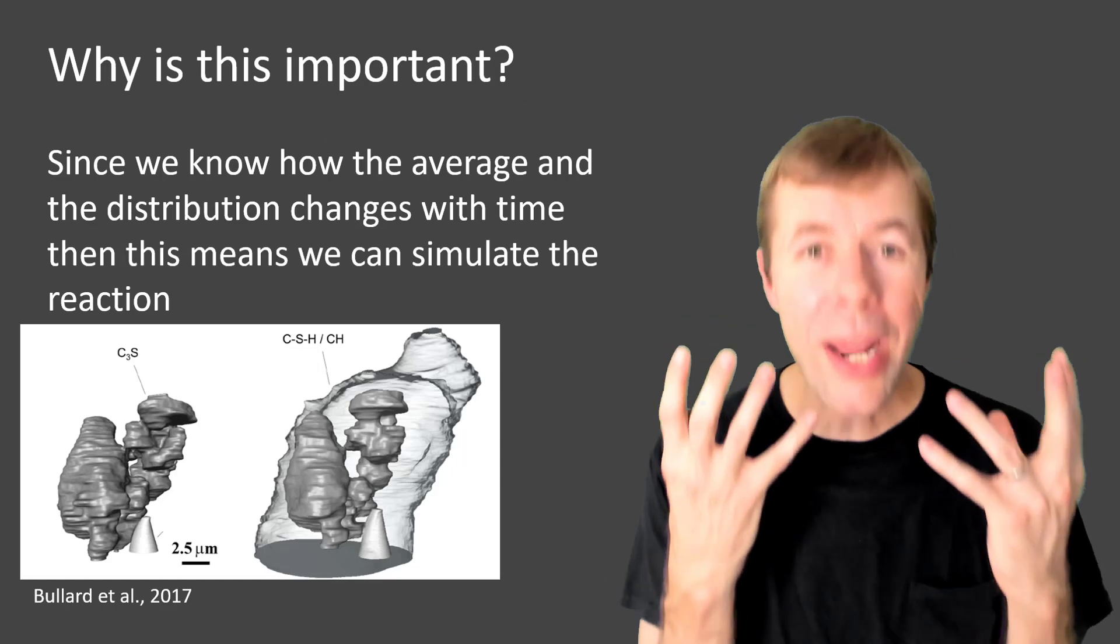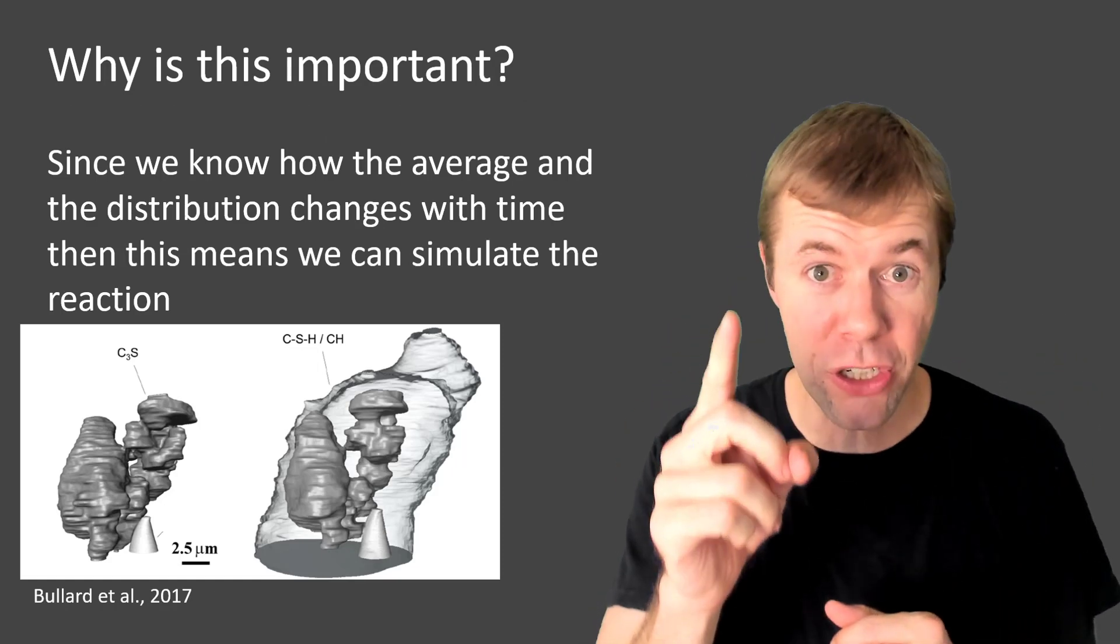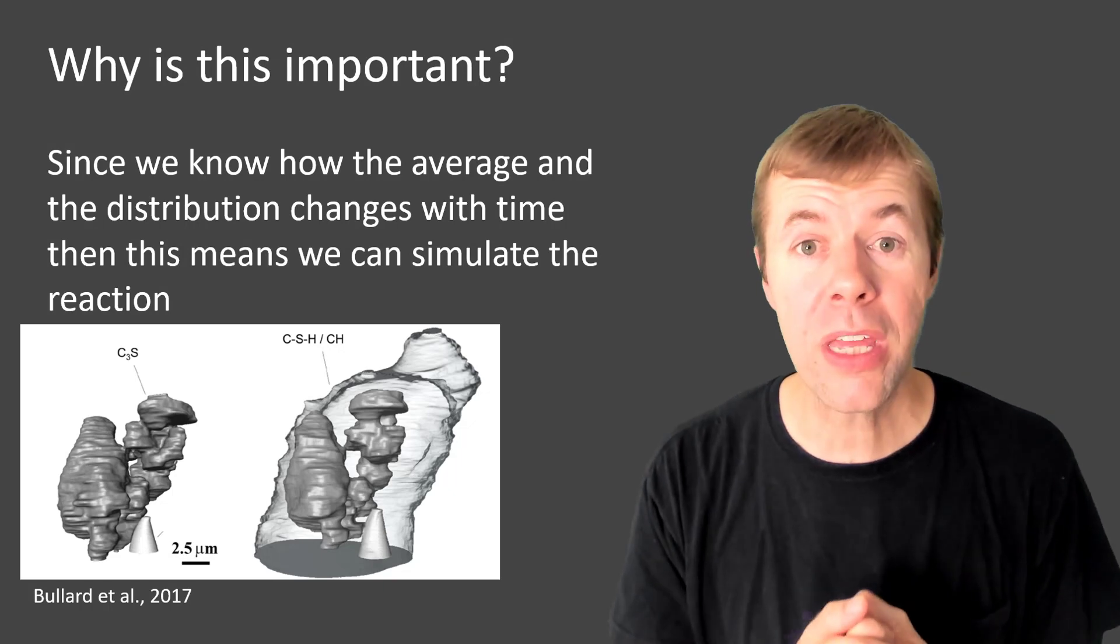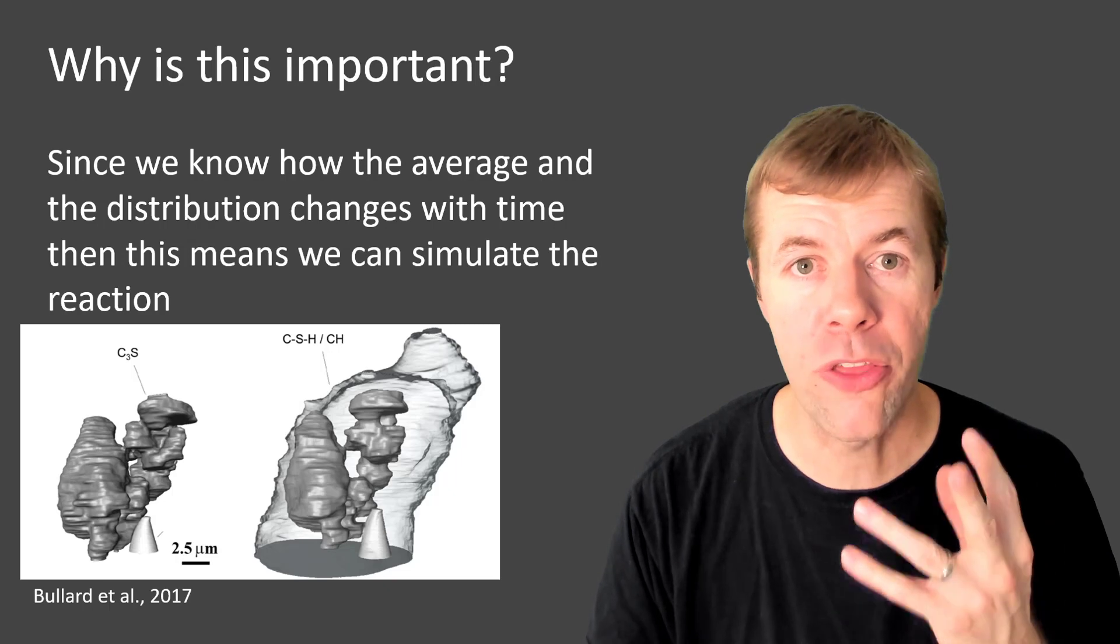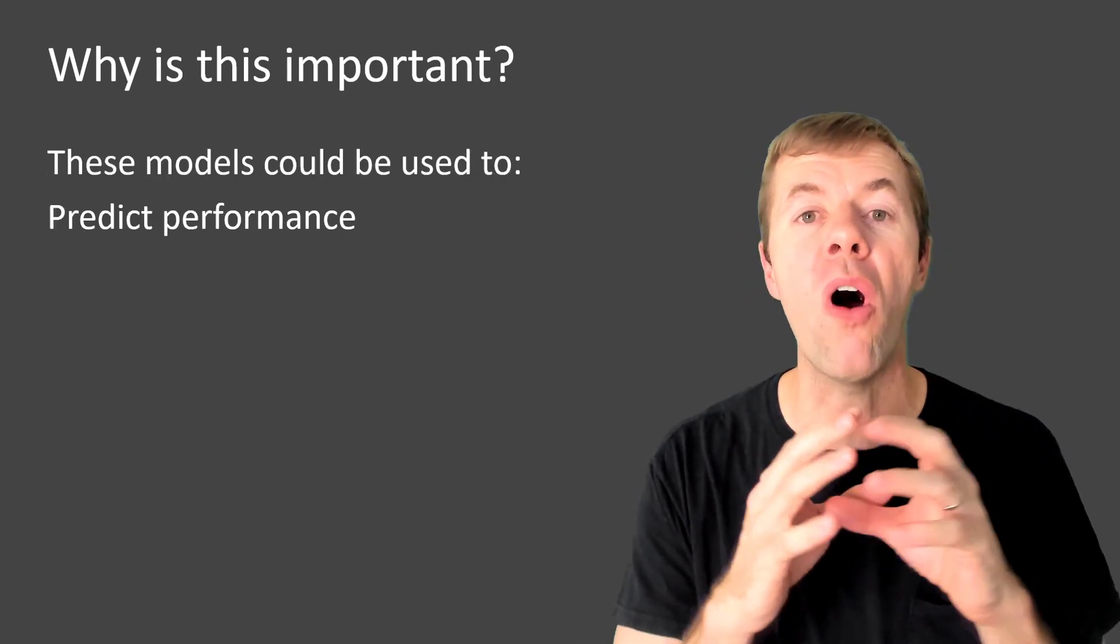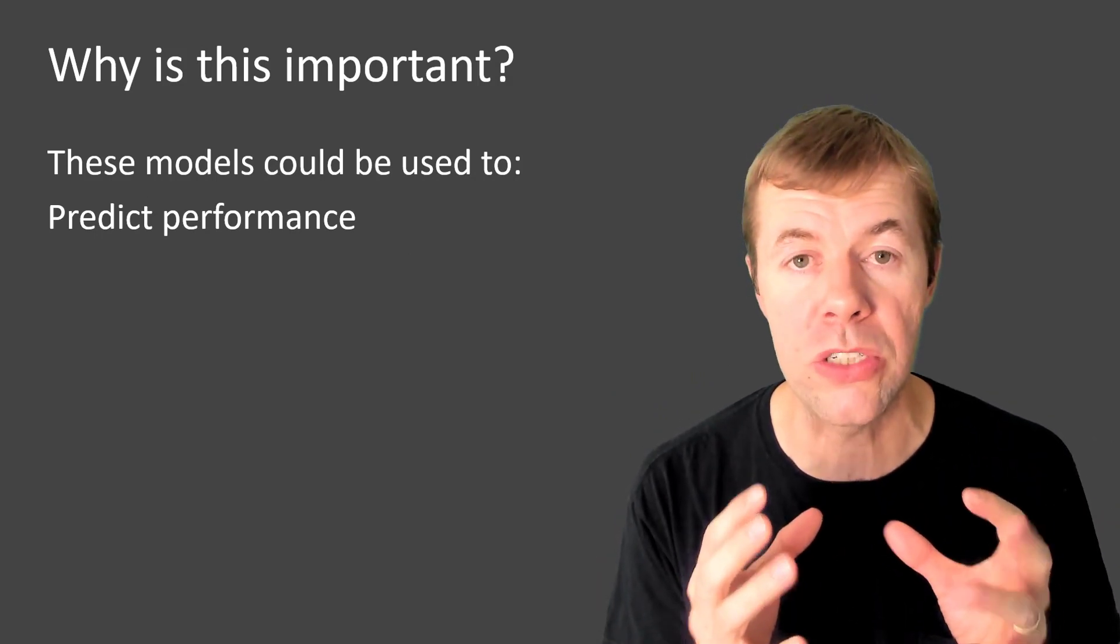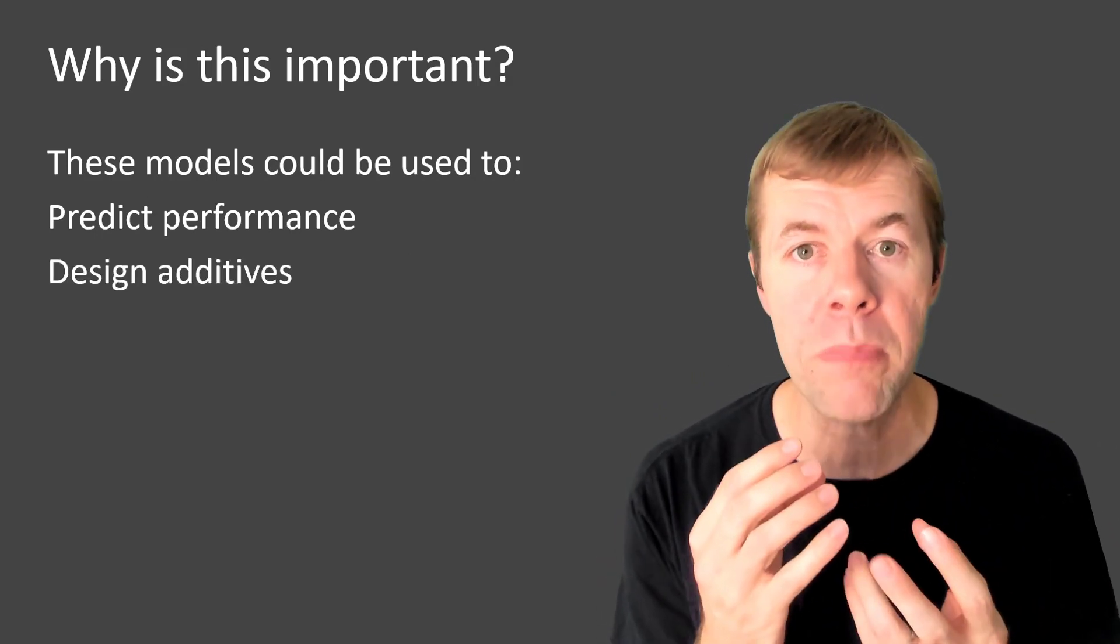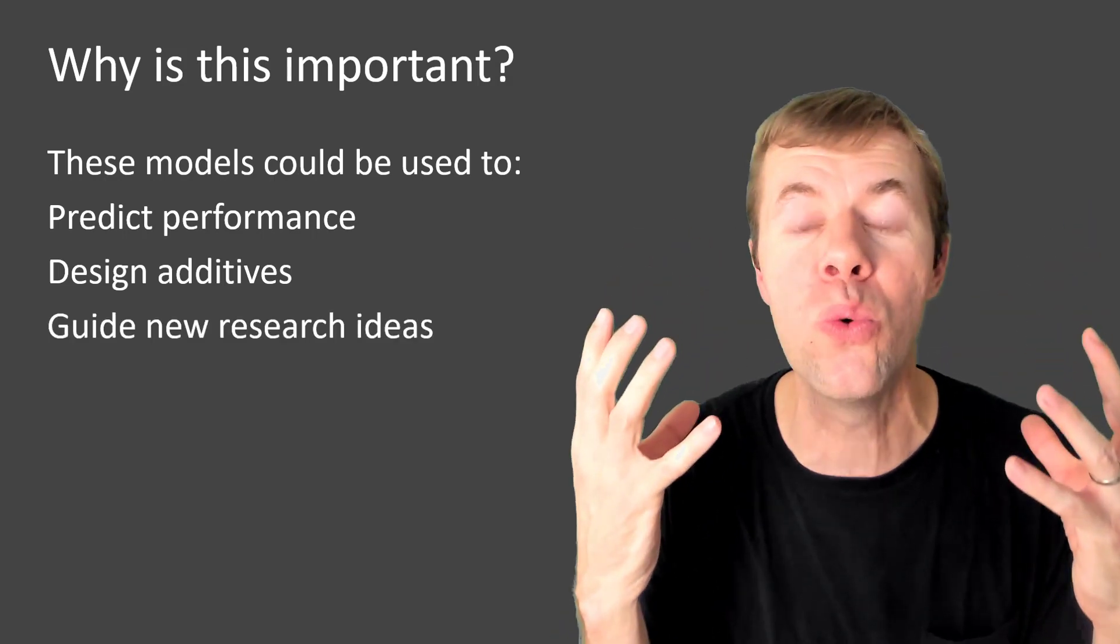So why is this important? Why do we care about this? Well, once you know the average and the distribution of something, you can model it, you can use math to simulate the reaction. This means you can predict the performance of all kinds of different concretes in all kinds of different situations, you could design special admixtures or additives, you could dream up all kinds of new research ideas with this tool. High five.